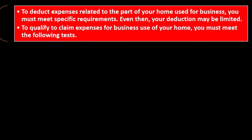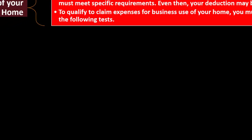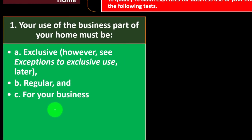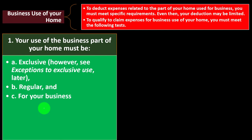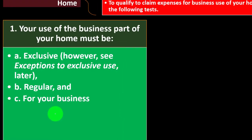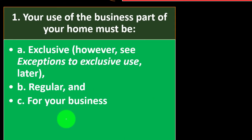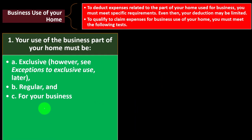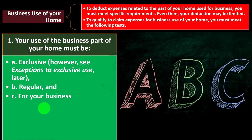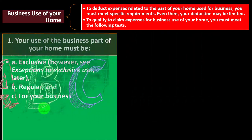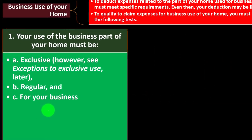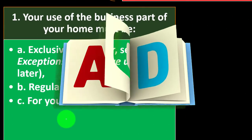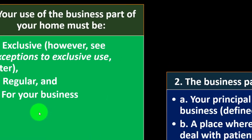To qualify to claim expenses for business use of the home, you must meet the following tests. Test number one: your use of the business part of your home must be exclusive — though there are exceptions to the exclusive use rule. So the general rule is that your use must be A) exclusive, B) regular, and C) for your business.